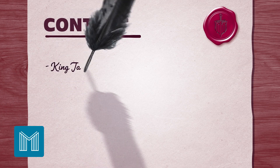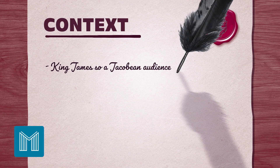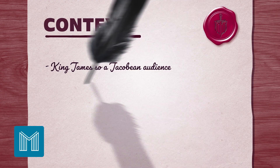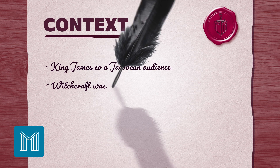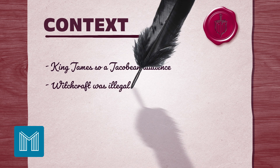In the exam you'll be marked on your contextual links, so here are five things you need to know about the play. King James was the king in Scotland at the time Macbeth was written, so whenever you talk about the effect make sure to mention the Jacobean audience. King James was scared of witches, thinking they raised a storm to try and shipwreck him between England and Scotland. Anyone caught doing witchcraft or talking to spirits was sentenced to death. This is possibly why the witches have such a sinister role of influencing the killing of the king.